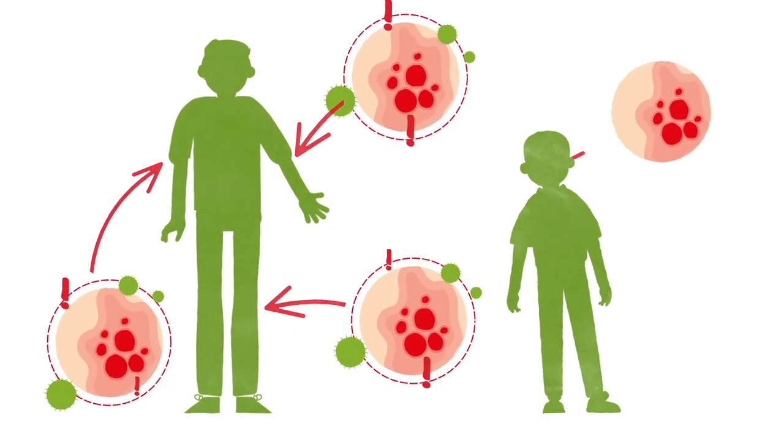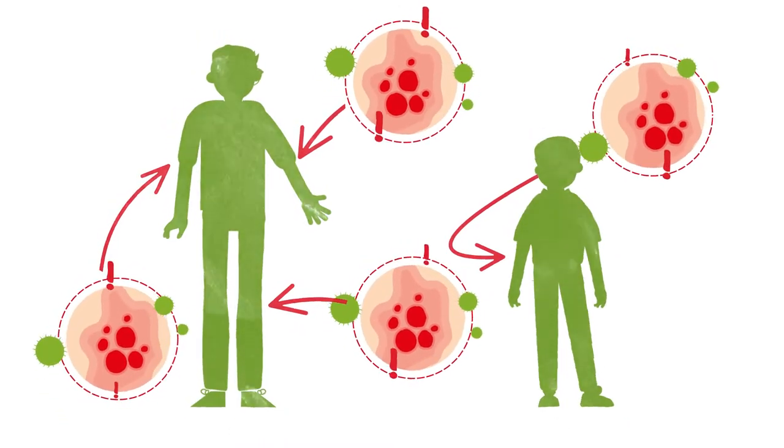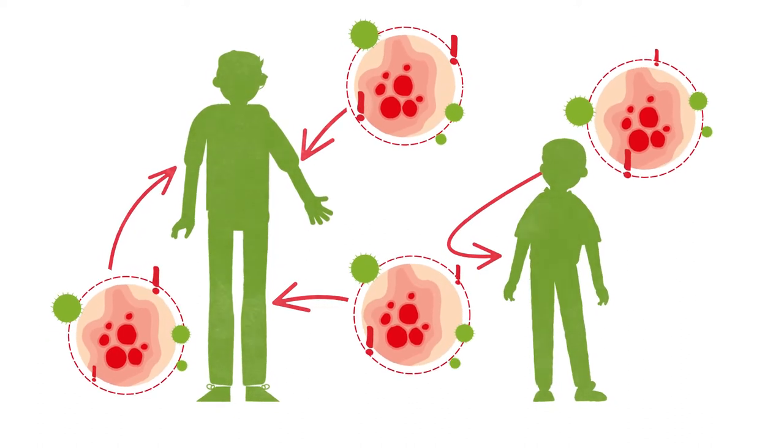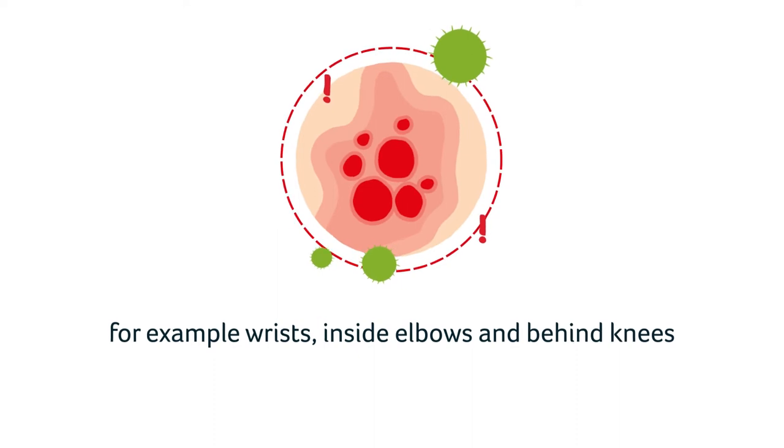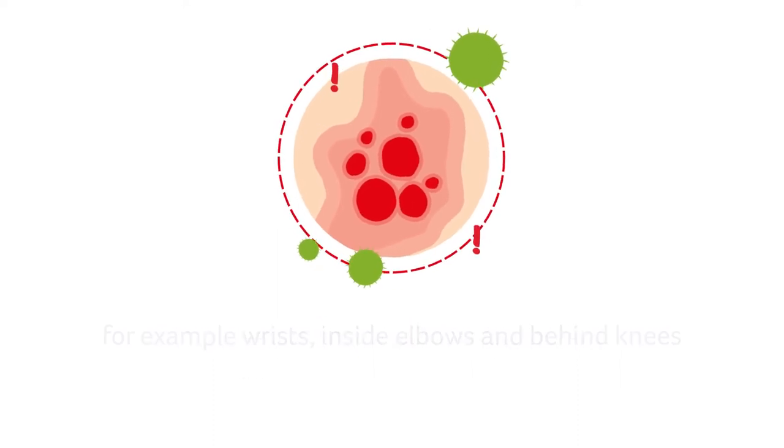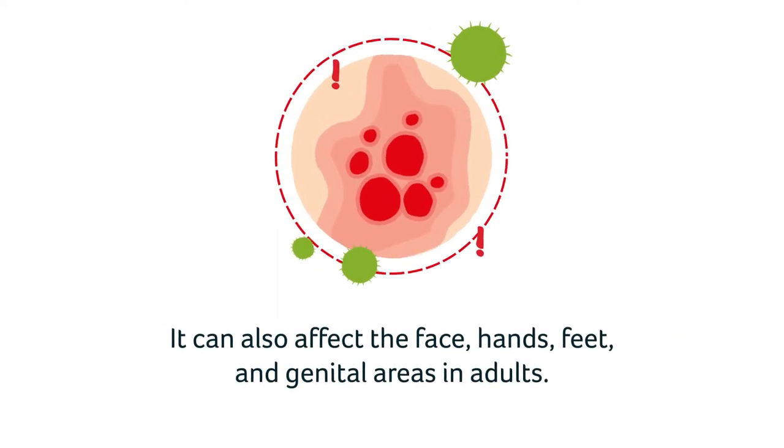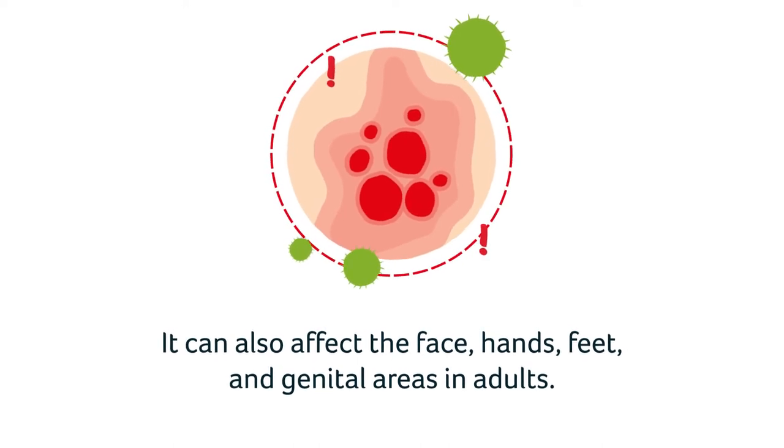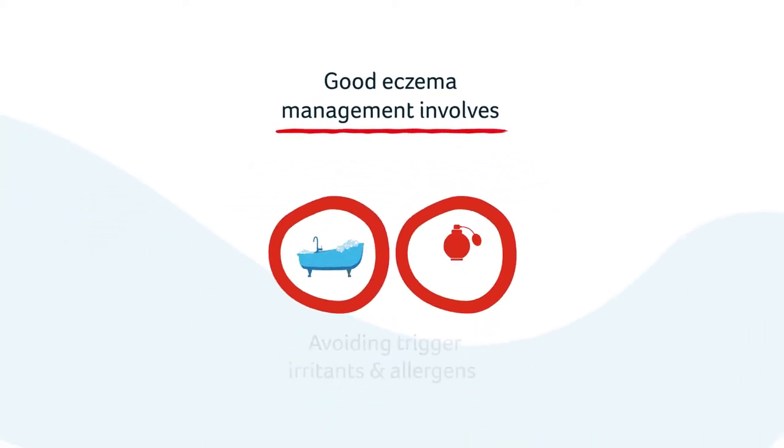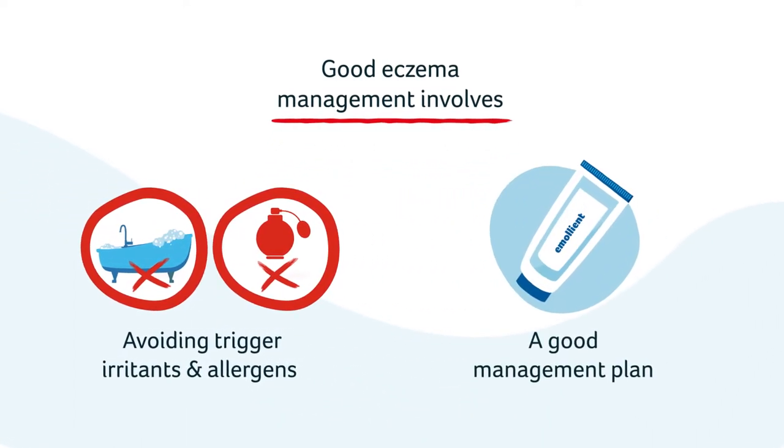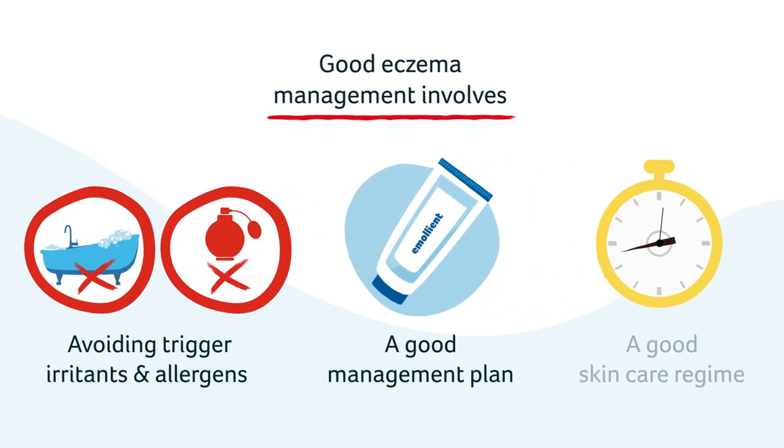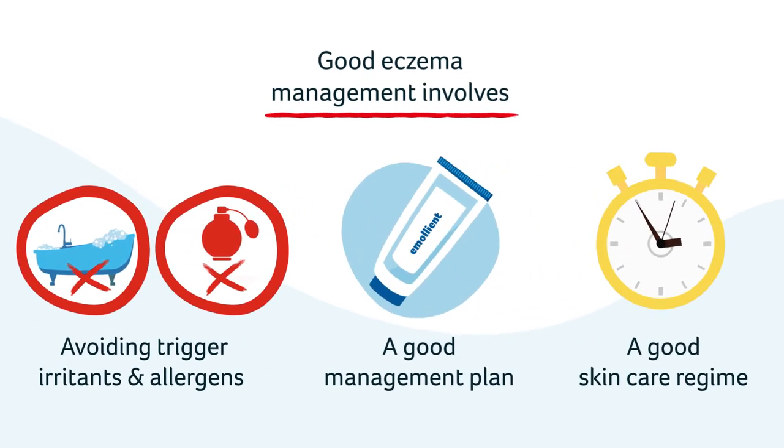Eczema can affect any area of the body in adulthood, often affecting the areas of the skin that bend or crease, for example wrists, inside elbows, and behind knees. It can also affect the face, hands, feet, and genital areas. In adults, avoiding your trigger irritants and allergens along with an agreed management and treatments plan and a good skincare regime are the best approach to eczema management.